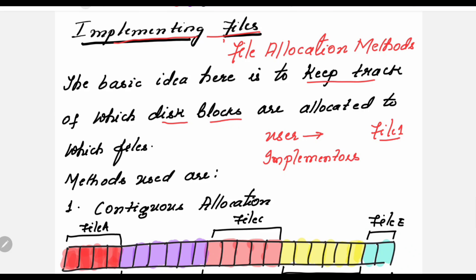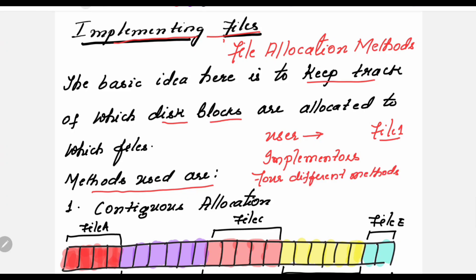Your disk consists of several blocks, so which blocks are used for which file? If you are allocating disk blocks for one file, what method are you using? We have four different methods used for allocation.